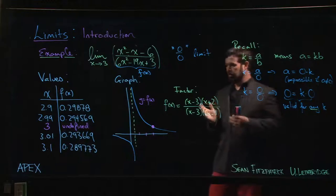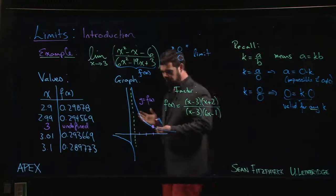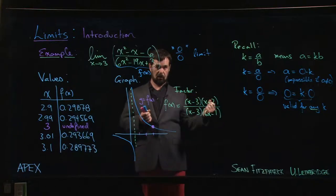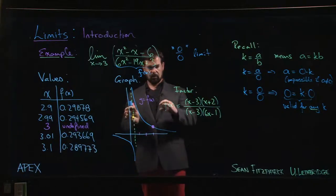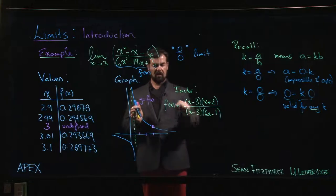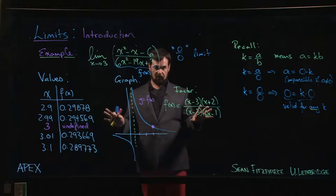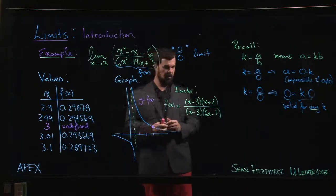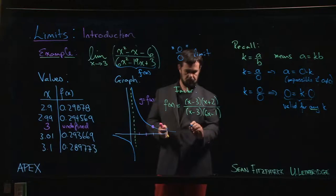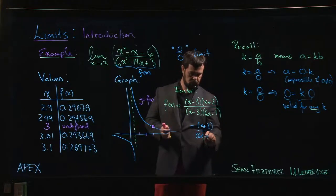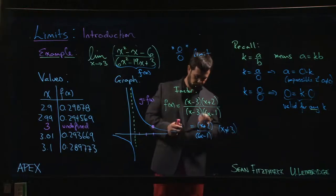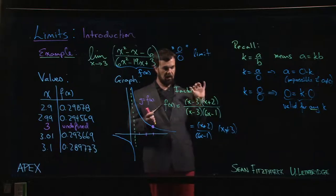This is where limits kind of come to the rescue, because one of the things that's built into the definition of the limit is that you're considering values of x which are close to three but not actually equal to three. Since you're not actually letting x equal to three, it doesn't matter if you cancel those factors. This function will agree with this function as long as x is not equal to three.